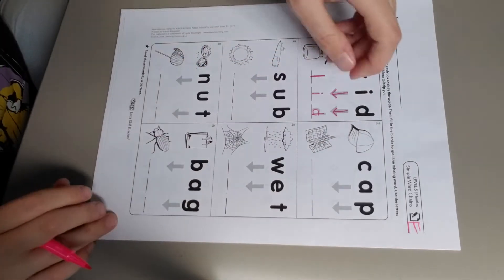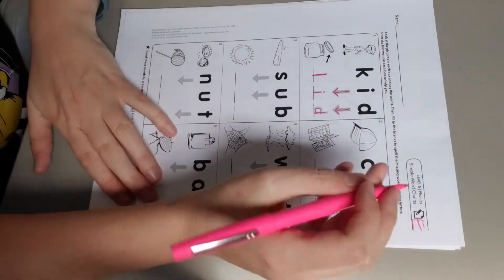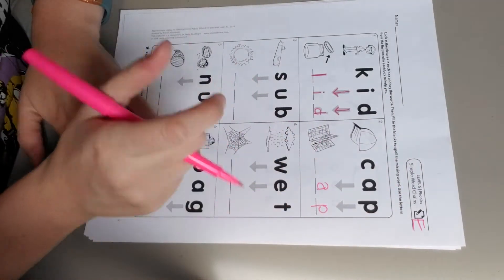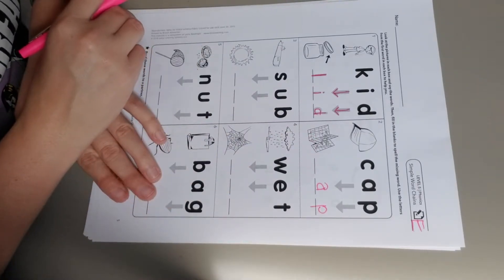Here they want you to do cap to map. The arrows are pointing from the A and the P, so I know I'm gonna bring my A down and my P down. Then I'm gonna think, what is this? This is a picture of a map. What makes the /m/ sound? An M, right? So I'm gonna fill that in the blank.